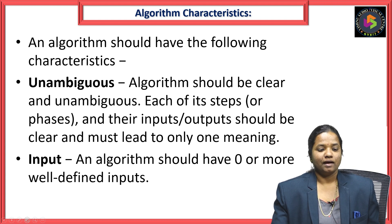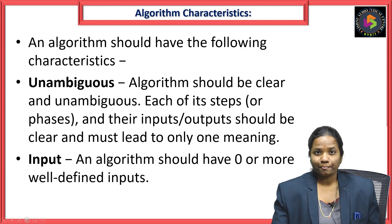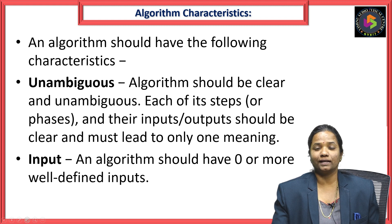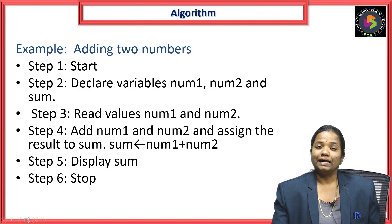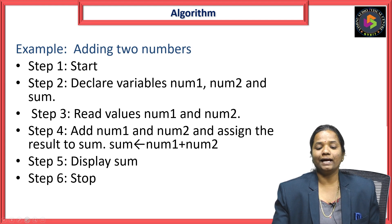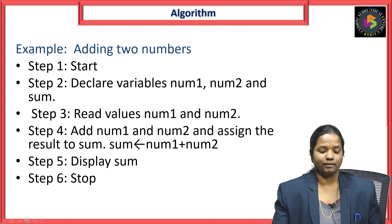The characteristics an algorithm must maintain are: input, output, finiteness, independence, and unambiguous. Unambiguous means every instruction of an algorithm should be clear and understood by all people who are able to write programs. Now let me give a complete idea about algorithms by giving a simple example.